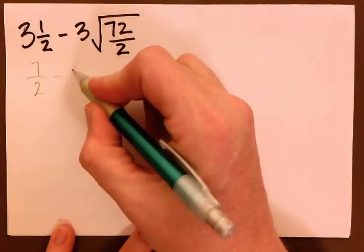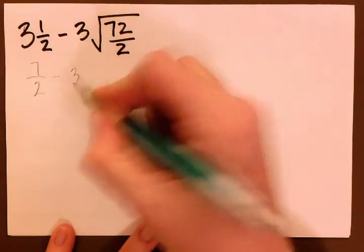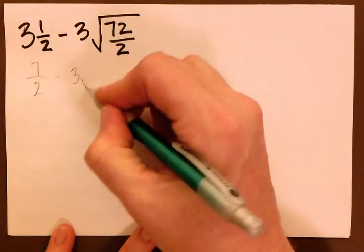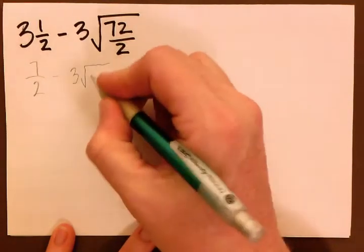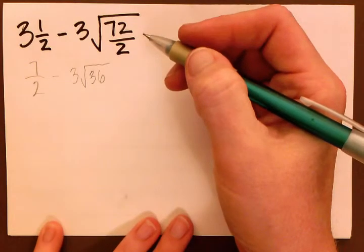Now we have 3 times the square root of 72 over 2. 72 over 2 is 36. So that's our next step.